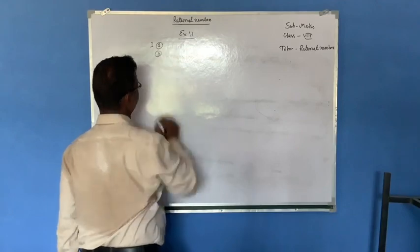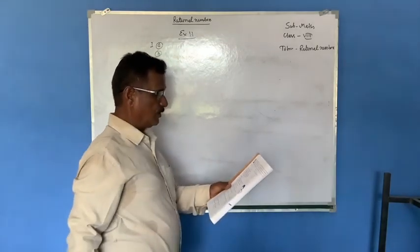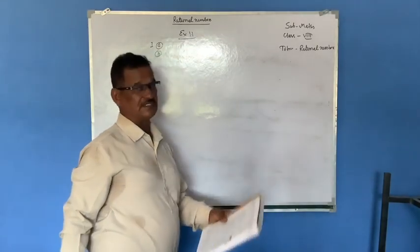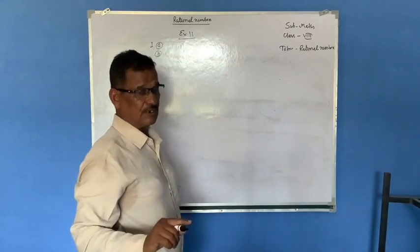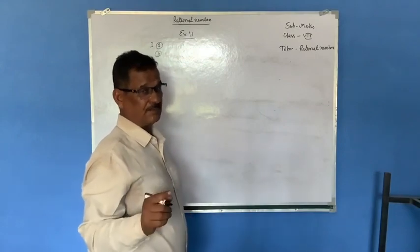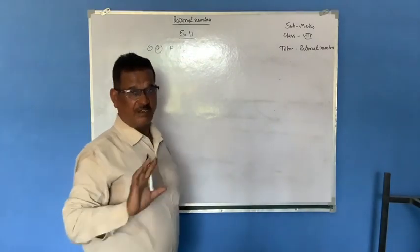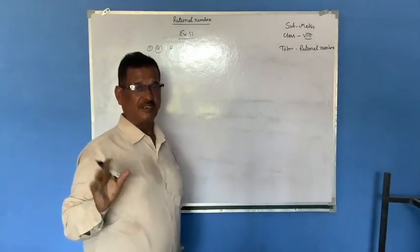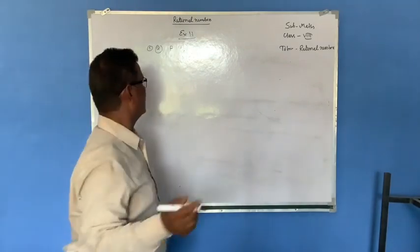B given: every whole number is a real number. Yes, this is true. Every whole number is a real number because all whole numbers are contained within the real numbers.